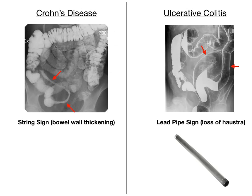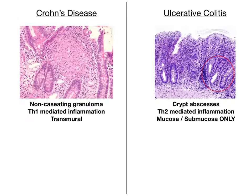The histology is very high yield. In Crohn's disease, you see non-caseating granulomas, and these are Th1-mediated. It is transmural inflammation — full thickness from superficial to deep layer. In ulcerative colitis, you see crypt abscesses, which are Th2-mediated. Please know that ulcerative colitis inflammation occurs at the mucosal and submucosal level only, so it's more superficial than Crohn's disease. If you understand the transmural versus mucosal and submucosal distinction, then many of these other symptoms and signs make perfect sense.